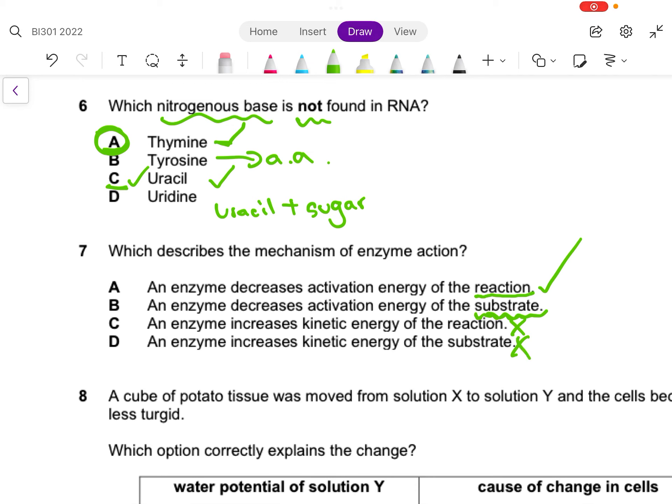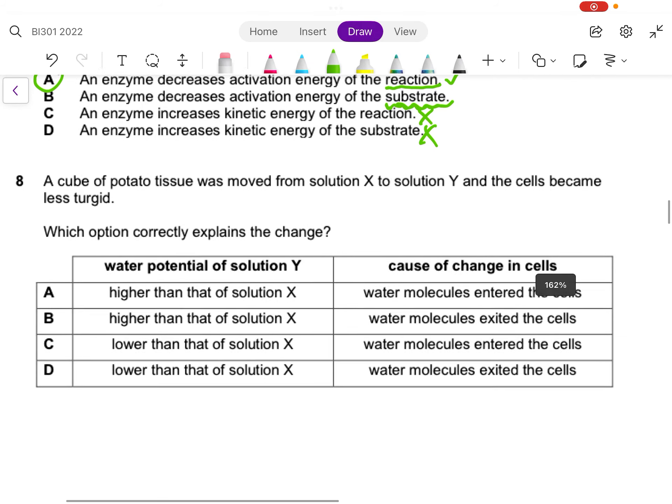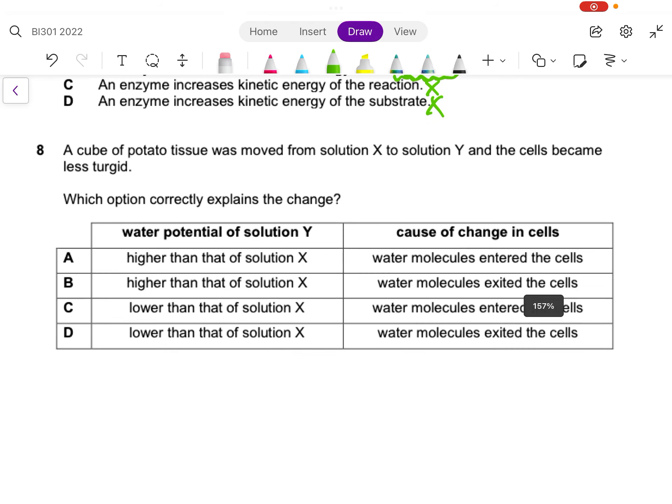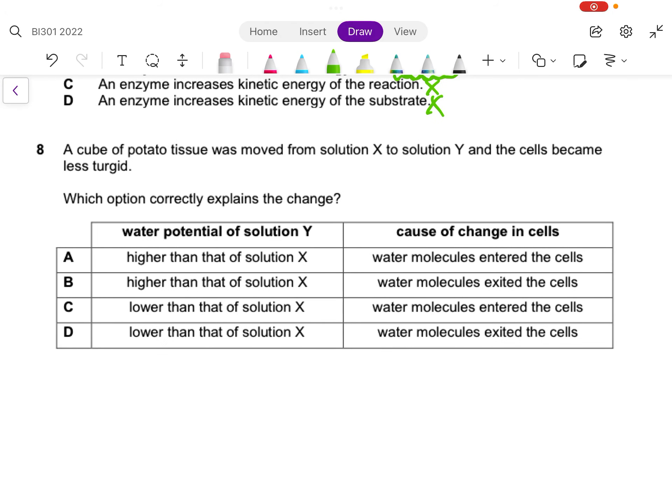Next let's look at question 8. A cube of potato tissue was moved from solution X to Y and the cells became less turgid. So if we look at a plant cell, if it becomes less turgid, means water has left the plant cell. And they say that they move it from solution X to solution Y.